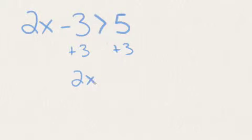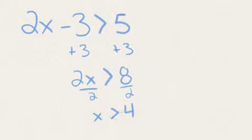So we're going to start with that 3 and add 3 to both sides. I'm left with 2x over here. 5 plus 3 is 8. And now to get the x all by itself, divide both sides by 2. And x is greater than 4.